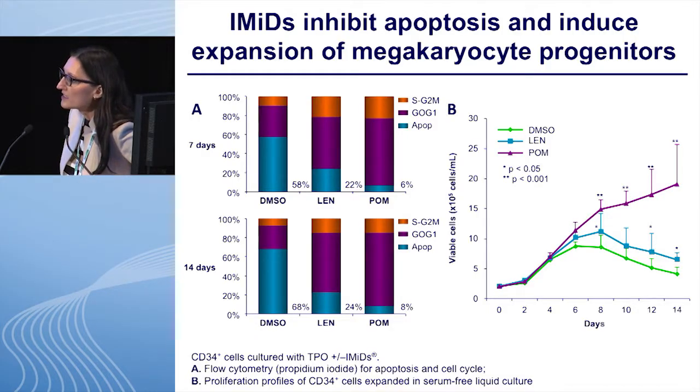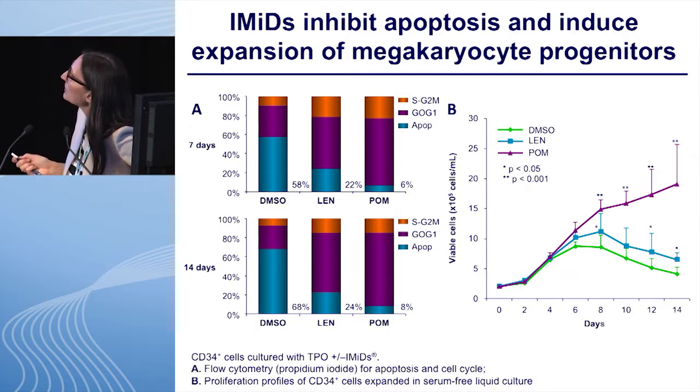We were interested in whether those cells are proliferative. Cell cycle analysis revealed, similar to our myeloid cell results, an increase in S phase. But very strikingly, there was also a dramatic decrease in apoptotic cells from almost 60% to 6% after seven days, and from 70% to 8% after 14 days. This was further reflected by exponential growth: lenalidomide expanded the cells within 14 days, while pomalidomide showed constant growth beyond 14 days. We were sometimes able to keep those cells alive in liquid cultures up to four months — remarkable, since hematopoietic stem cells normally cannot be maintained longer than three to four weeks.